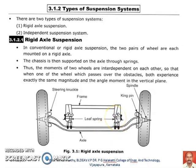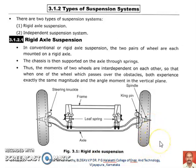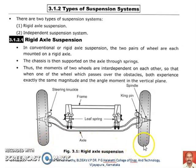Here, it is a Leaf Spring Suspension System, and this is one of the conventional suspension systems. Basically, two pairs of wheels are mounted on the rigid axle. The chassis is supported on the axle through the springs. When the wheel is passing over irregularities or obstacles, it experiences exactly the same magnitude and angle of movement in the vertical plane, whether it is the left or right wheel. Whenever a wheel approaches an obstacle, the movement will be transferred to the entire axle of this rigid axle suspension system.